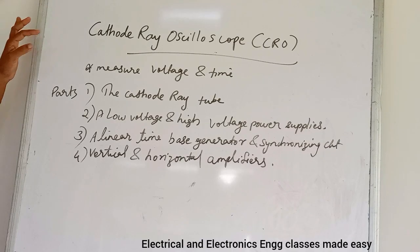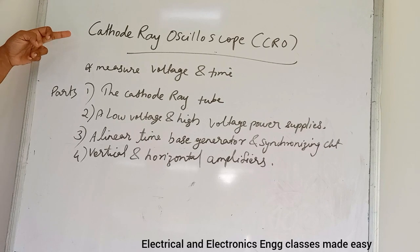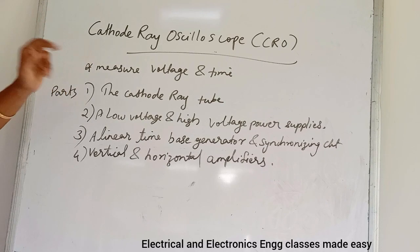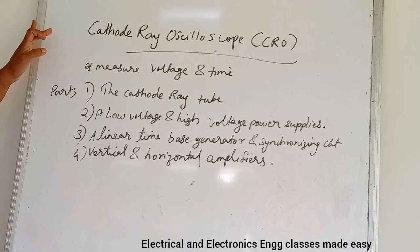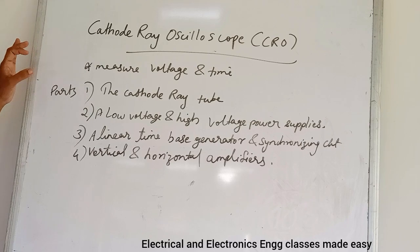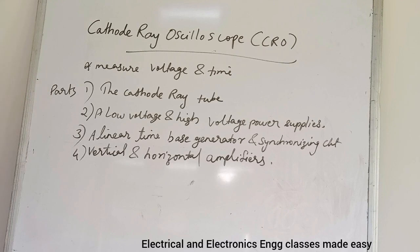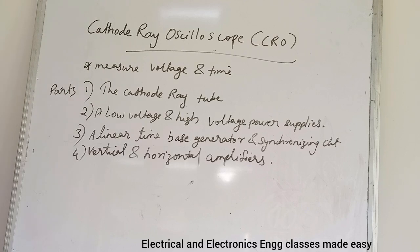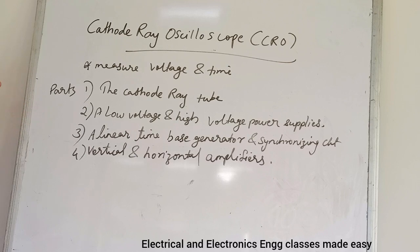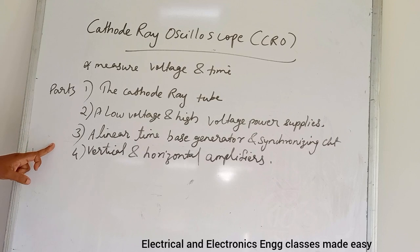Welcome to this class on the Cathode Ray Oscilloscope, that is CRO. A cathode ray oscilloscope is an electronic instrument that provides a visual representation of any waveform applied to its input terminals. It is used to measure voltage and time, and the CRO is used in many fields such as engineering, biology, and medicine. These are the main parts of a CRO.